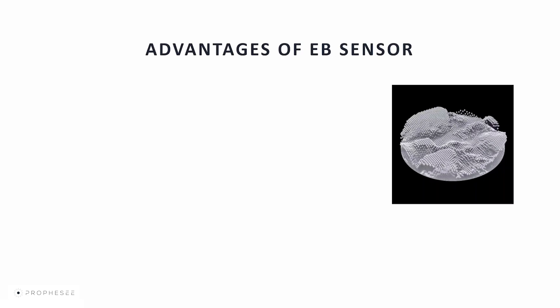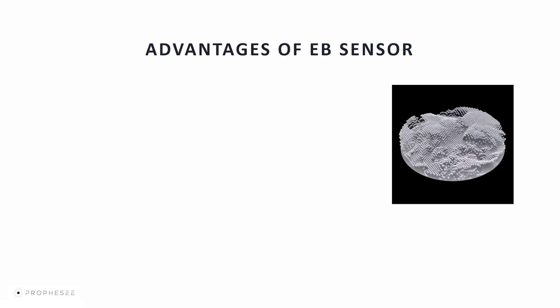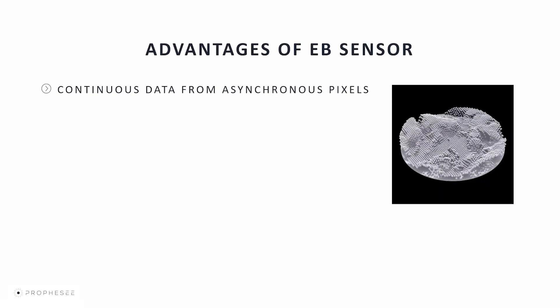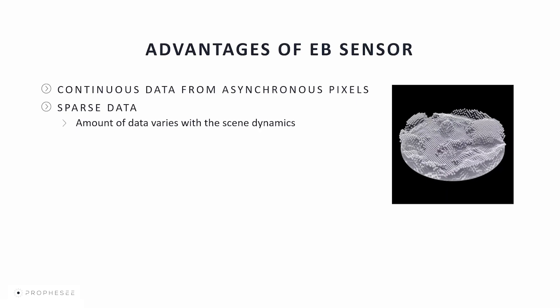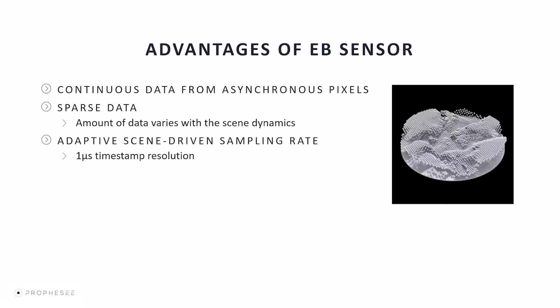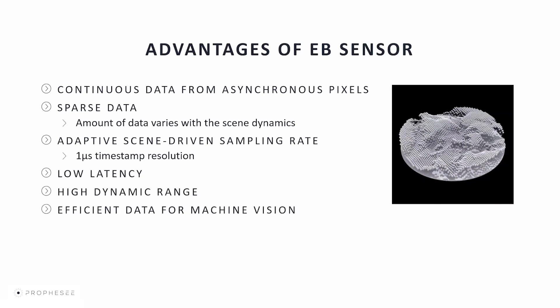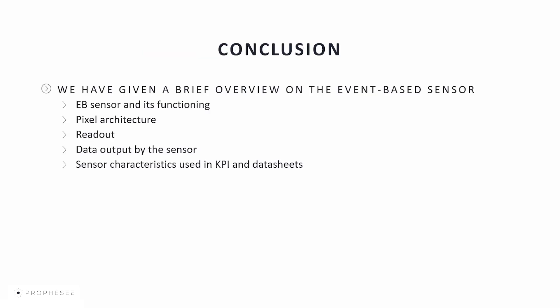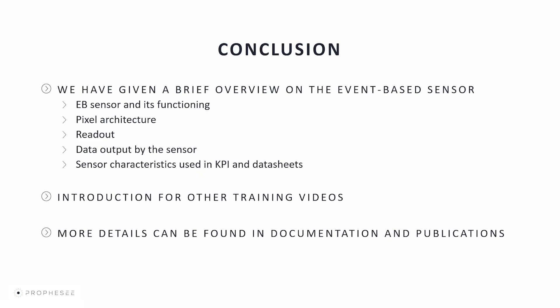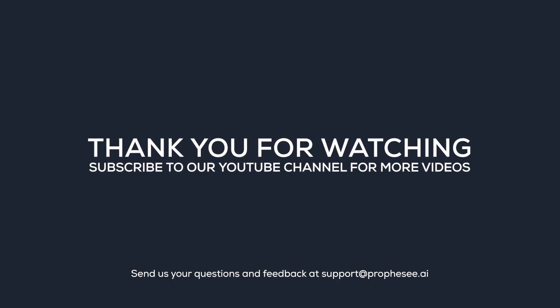Event-based pixel architecture brings a number of advantages: continuous data from asynchronous pixels, sparse data where the amount varies with scene dynamics, adaptive scene-driven sampling at one microsecond timestamp resolution, low latencies, higher dynamic ranges, and efficient data for machine vision. To conclude, we've given a brief overview of the event-based sensor including sensor functionality, pixel architecture, readout functionality, data output and data types, and sensor characteristics used in KPIs and datasheets. More details can be found in our documentation, knowledge base, and publications. Thank you for watching.